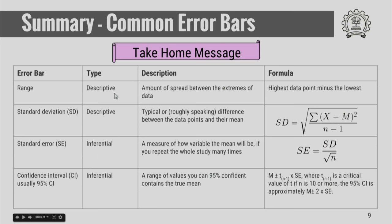Range is a descriptive error bar representing the spread between the extremes of the data, calculated by subtracting the lowest data point from the highest. Standard deviation is a descriptive error bar representing the typical difference between the data points and their mean. The formula for standard deviation is the square root of the summation of the squared differences of each data point from the mean, divided by the total sample size n minus 1.